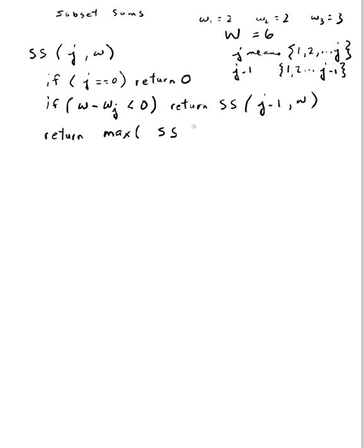So I want to return the max of calling my SS function on J-1 and my initial weight. This means I'm not using the Jth item, so my weight that I'm allowed to work with doesn't change.